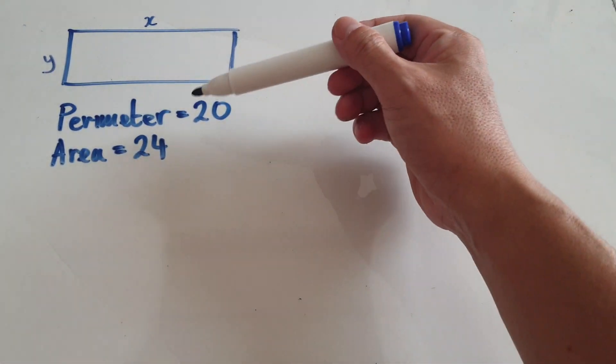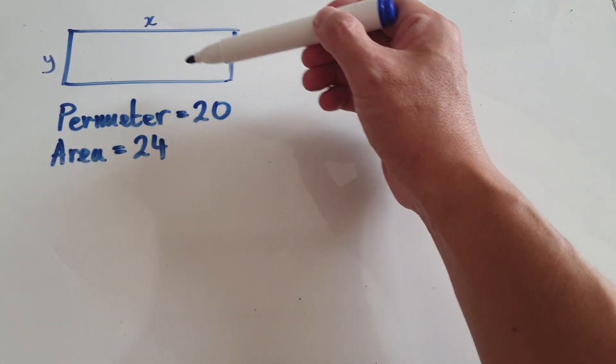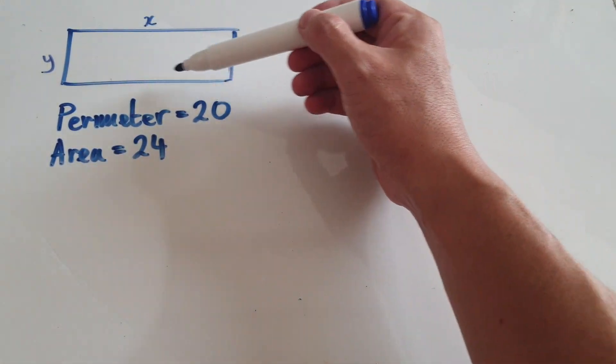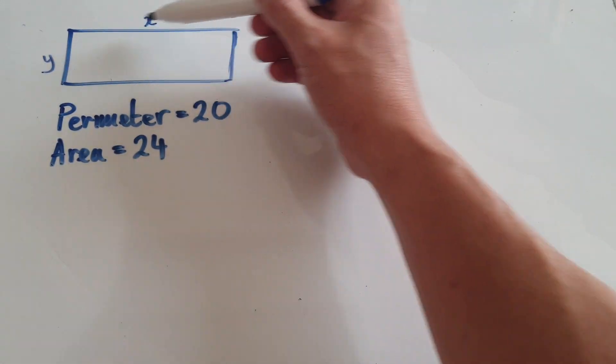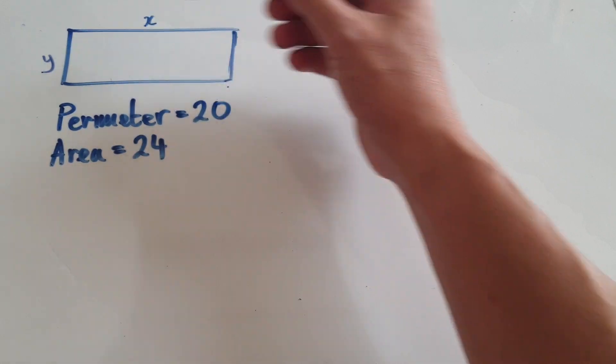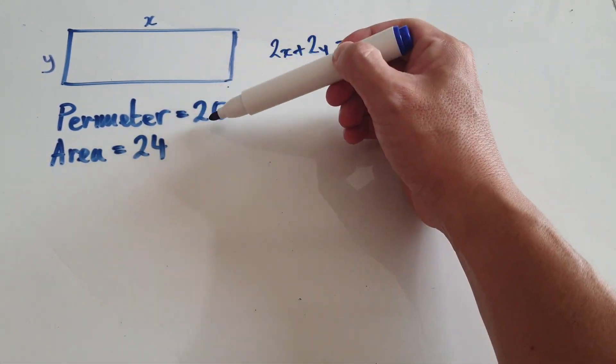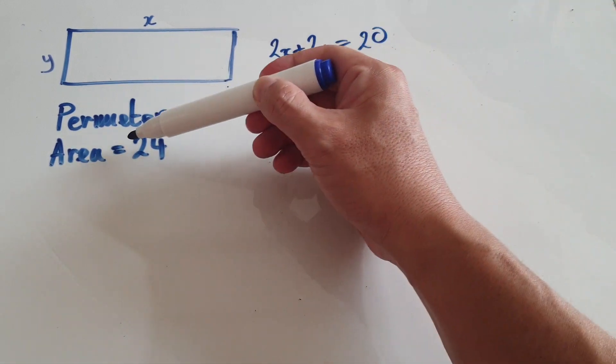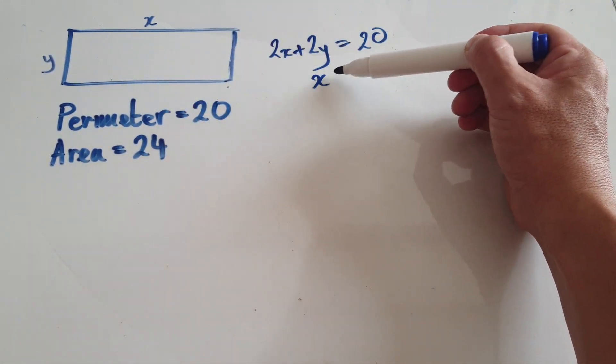Learn the method, not the guessing route. Anyway, the perimeter is 20, so let's use algebra to set up the two equations. The perimeter is x plus y plus x plus y, so 2x plus 2y equals 20, and the area...